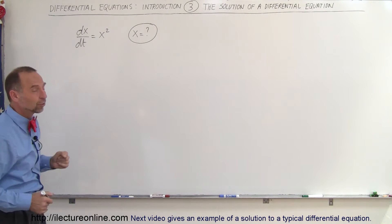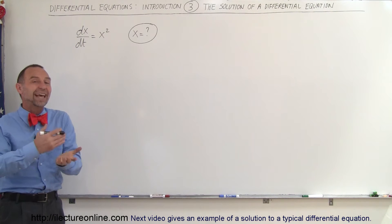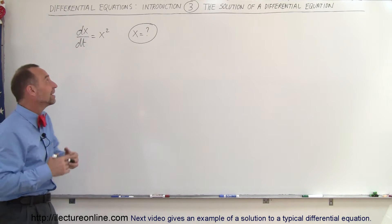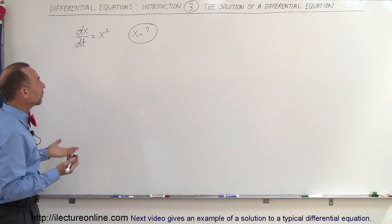Here we have dx/dt equals x squared, and so what we're trying to find is what is x equal to. And remember, x is not a number, x is actually a function of t. All right, how do we find that?